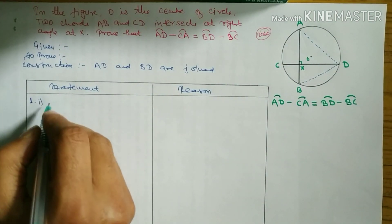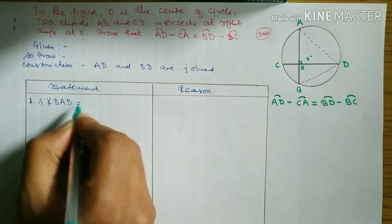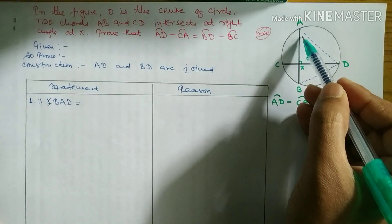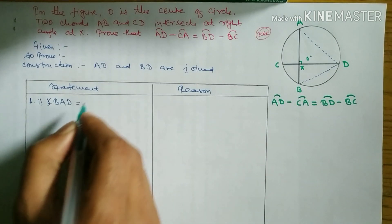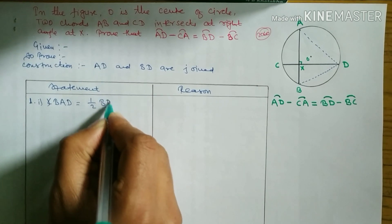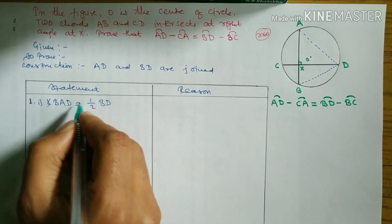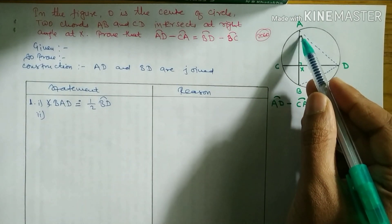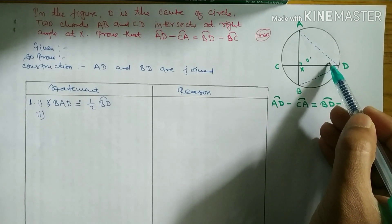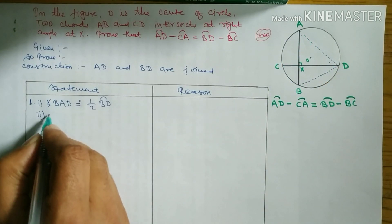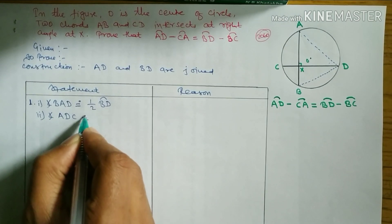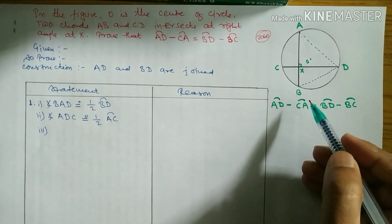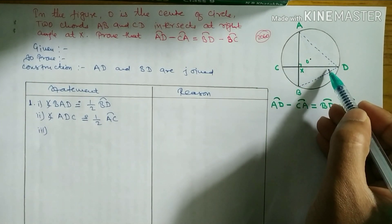In number one, I'm going to write four points here. First one: angle BAD is half of arc BD. Inscribed angle is always half of opposite arc. In number two, similarly we can write angle ADC is half measure of arc AC. In number three, angle BDC is half measure of arc BC.